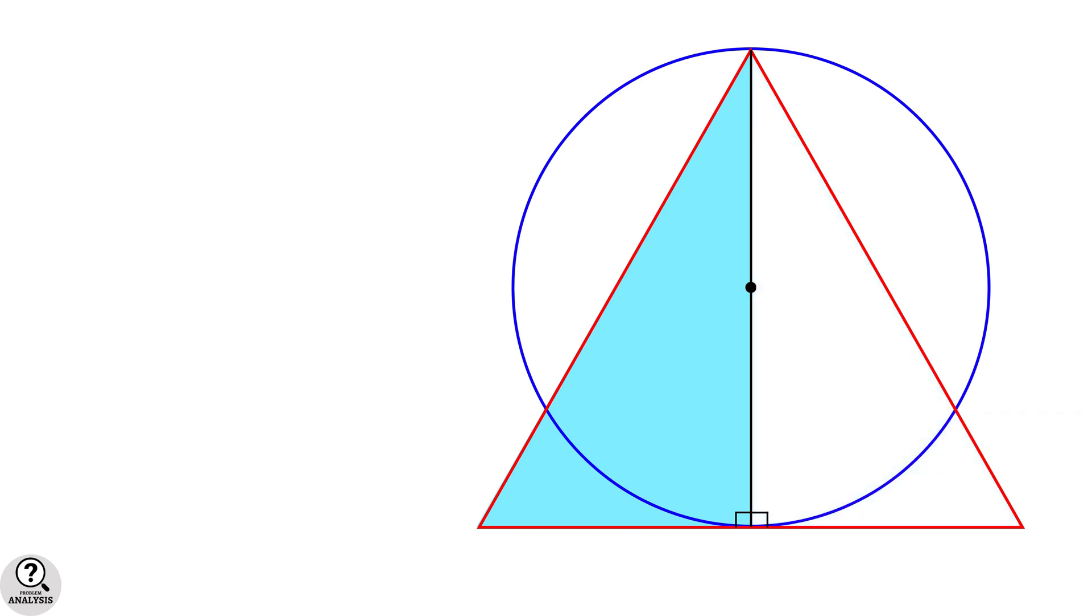Now consider any one of the right triangles. Since our triangle in the problem is an equilateral triangle, all the interior angles will be 60 degrees. So in the blue right triangle, one of the known angles is 60 degrees.